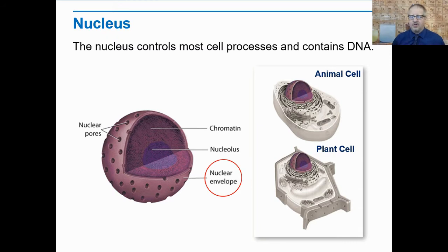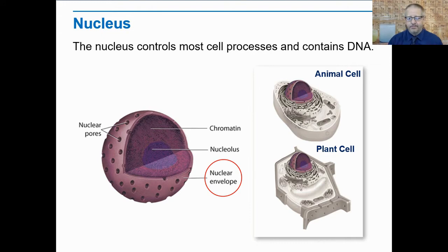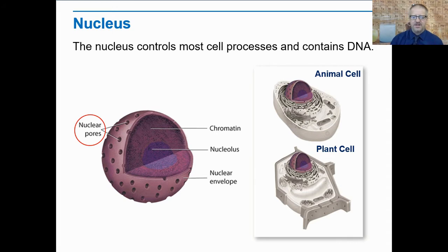So here we have the nuclear envelope — that's the outside of the nucleus, kind of similar to the cell membrane itself. It has a double-layered membrane barrier, and that barrier protects the DNA. On the nuclear envelope, we have nuclear pores. These pores are basically tiny little holes or ports in the envelope that allow certain components to enter and leave the nucleus.